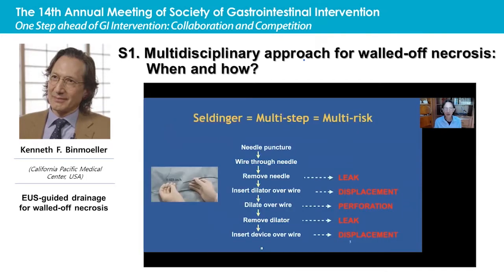The Seldinger technique has worked well, but it does have drawbacks. It is time-consuming and requires multiple over-the-wire exchanges. If the wire pulls back, we lose access to the cyst. Being multi-step, it is also multi-risk. As soon as we remove the needle, we have a gap between the guide wire and the tract, which can result in leak. If we insert a dilator over the wire, this can displace the cyst from the bowel wall. If we dilate over the wire, this can result in perforation. Once we remove the dilator, we have a larger gap, again causing leak. And stent placement can also result in displacement of the cyst from the bowel wall, with perforation being the most dreaded complication.